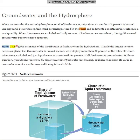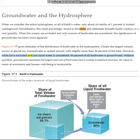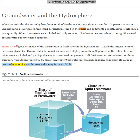Figure 17.1 gives estimates of the distribution of freshwater in the hydrosphere. Clearly the largest volume occurs as glacial ice. Groundwater is ranked second, with slightly more than 30% of the total. However, when ice is excluded and just liquid water is considered, 96% of all freshwater is groundwater. Without question, groundwater represents the largest reservoir of freshwater that is readily available to humans. Its value in terms of economics and human well-being is incalculable.